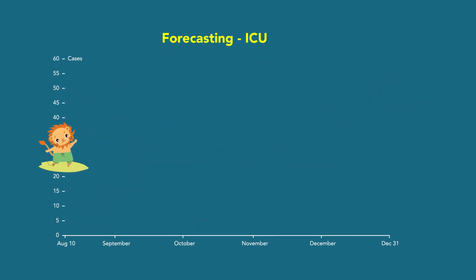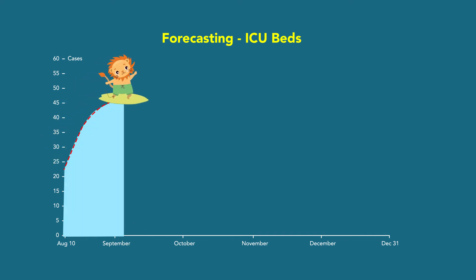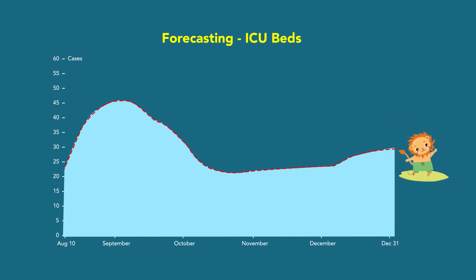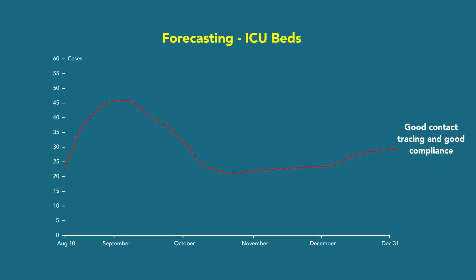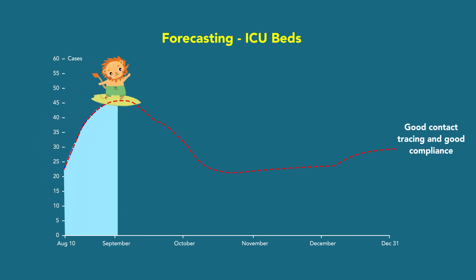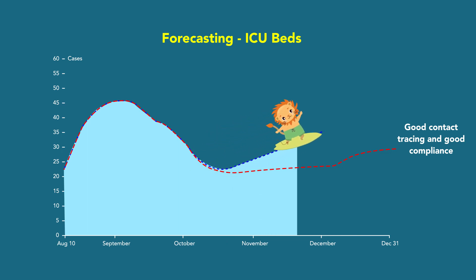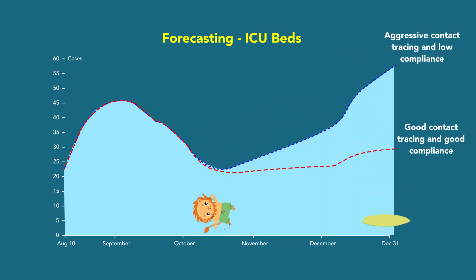This is the forecasting of ICU beds and is pretty similar to the previous one. Notice this bottom dashed line here never goes back up because it is controlled. And if we want to be able to surf that wave safely, as our surfer friend just did, we have to be responsible. If we are not compliant enough and only count on the government, we will go on that plain wave and crash like our surfer friend just did.